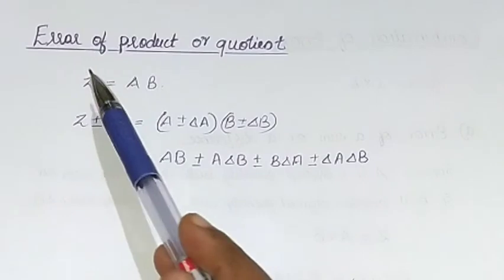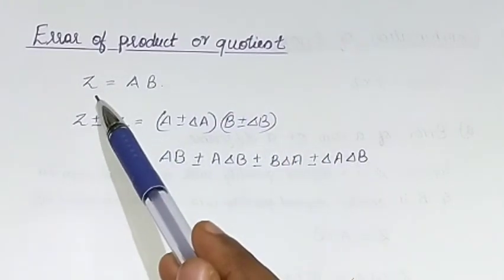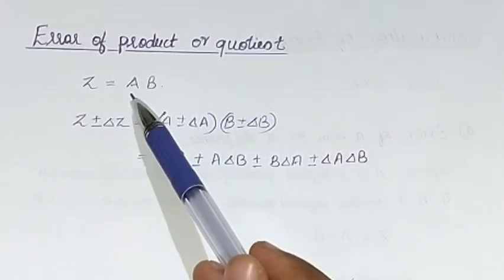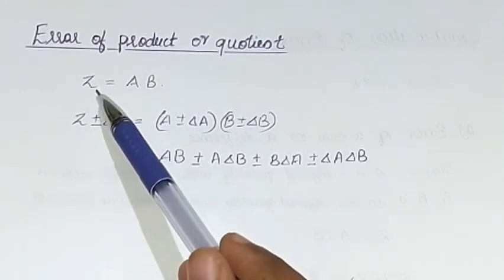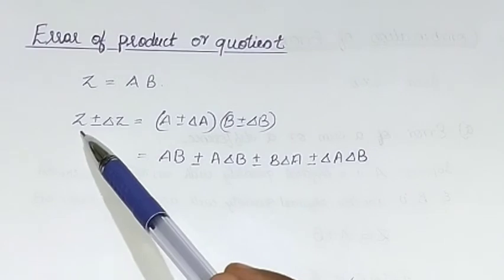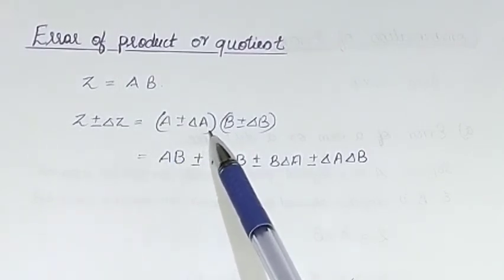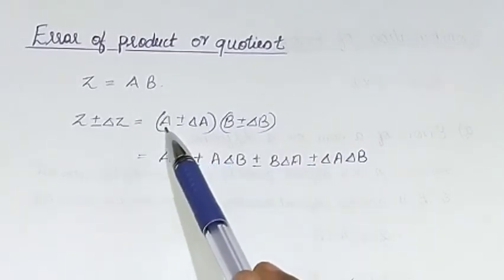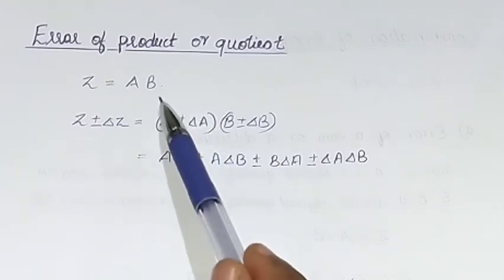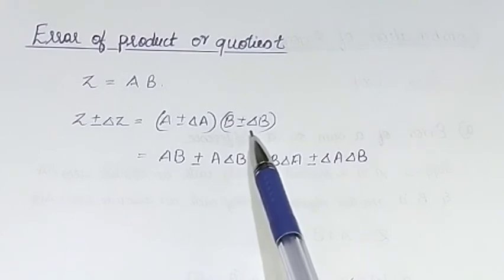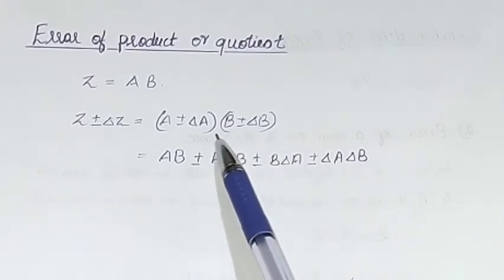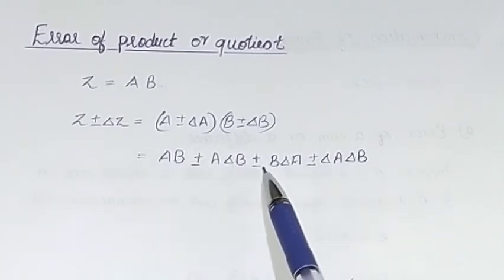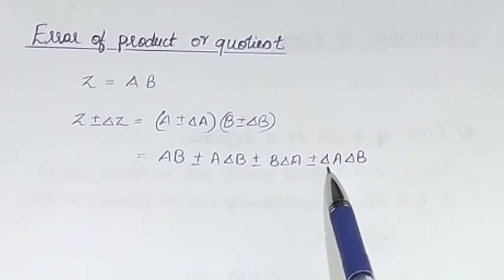Now we are going to see the error of a product or quotient. For that, our quantity z will be a × b, the product of physical quantities a and b. To find the absolute error in z, we write z ± delta z = (a ± delta a)(b ± delta b). Taking the product, we get ab ± a·delta b ± b·delta a ± delta a·delta b.